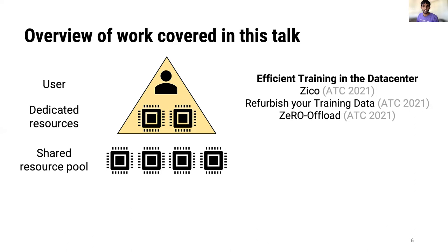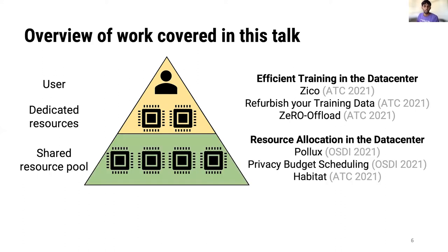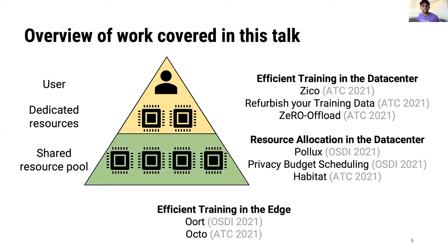Zico, Refurbish Your Training Data, and Zero Offload are systems that address inefficiencies in the training process once a job has been allocated resources. Zico, Privacy Budget Scheduling, and Habitat are systems that try to make it easier to decide how resources should be allocated to various training jobs. In certain cases, machine learning training can also be performed directly on edge devices such as smartphones or IoT devices. Oort and Octo are systems that try to make this process more efficient.